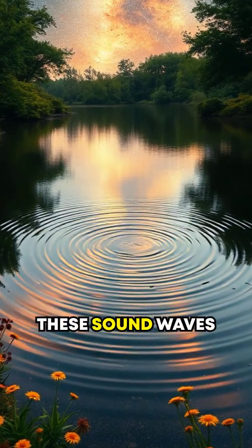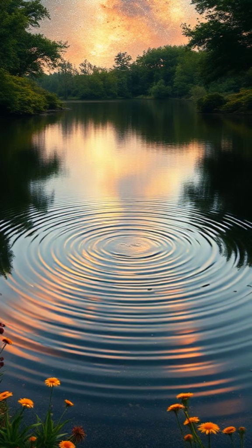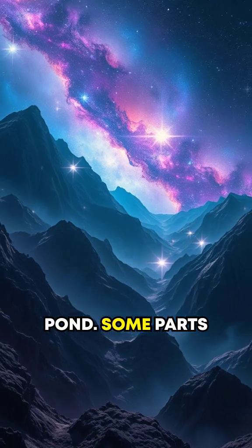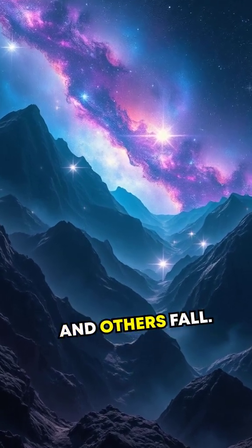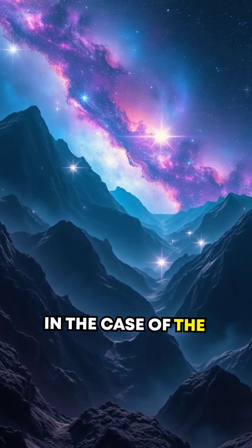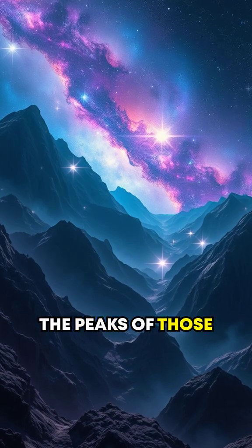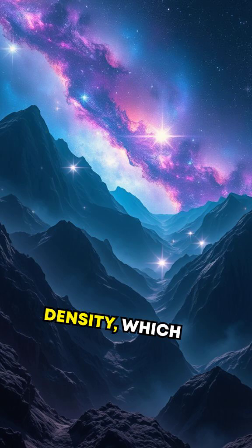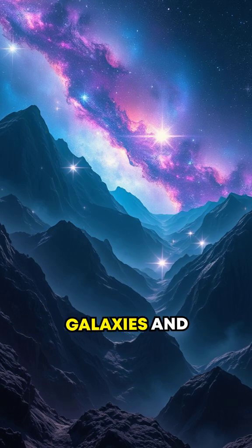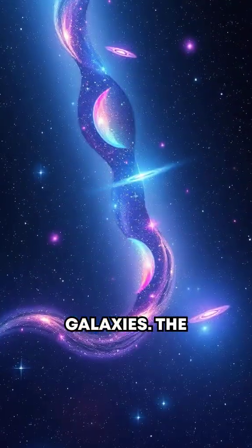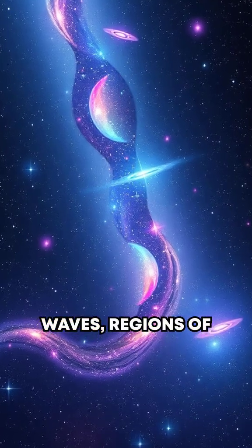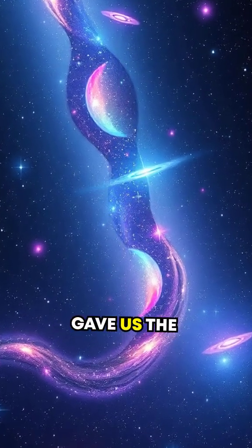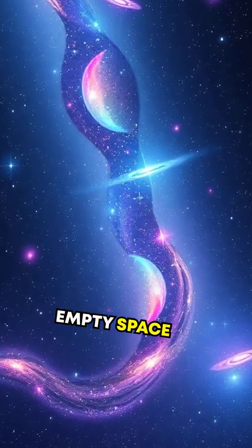Here's how these sound waves shaped our universe. Imagine waves on a pond. Some parts of the wave rise, and others fall. In the case of the early universe, the peaks of those waves were regions of higher density, which would go on to form galaxies and clusters of galaxies. The troughs of those waves, regions of lower density, gave us the enormous gaps of empty space between galaxies.